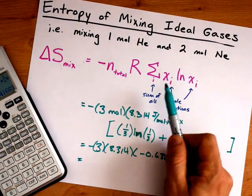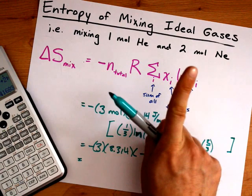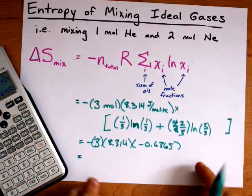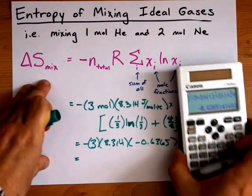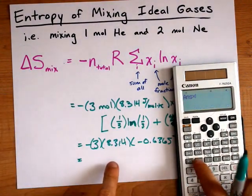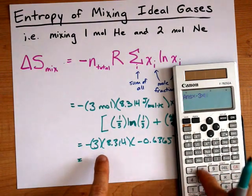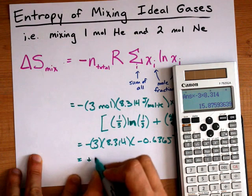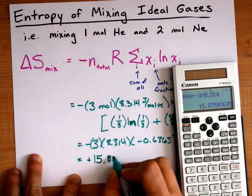Keeping in mind that each chi i can't be more than one, because no more than 100% of the atoms can be one thing. Okay, in any case, that's enough me nerding out about the math. Let's multiply this by negative 3, and multiply it by 8.314 while we're here, and I get positive 15.86.